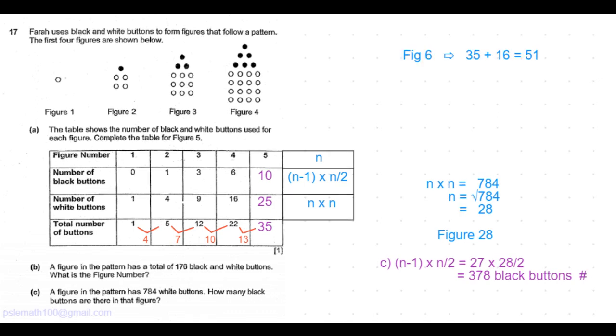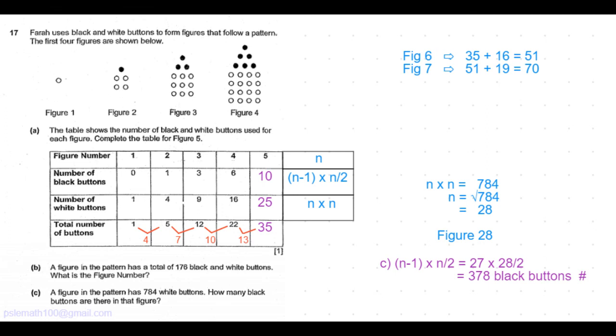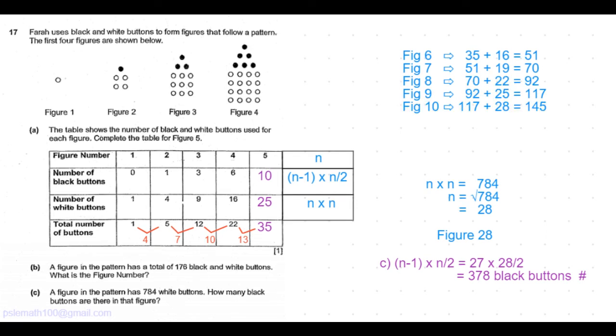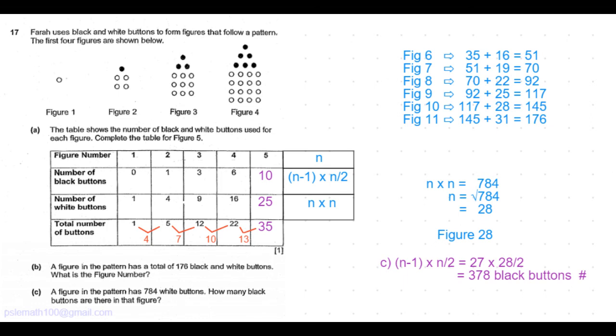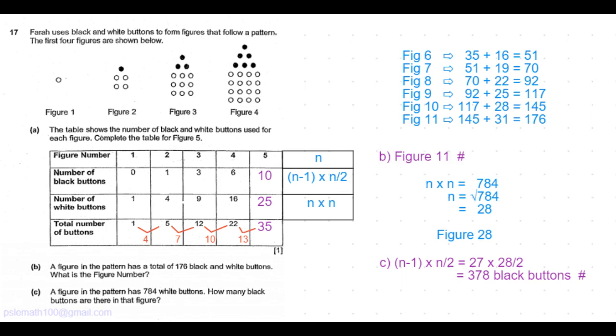So we can continue to find out figure 6, which would be 35 plus 3 more than 13, which is 16, giving us 51. And figure 7 would be 51 plus 3 more than 16, which is 19, giving us 70, and so on. So figure 8 would be 92, figure 9 would be 117, figure 10 would be 145, and figure 11 would be 176. So we get that figure 11 would have 176 black and white buttons.